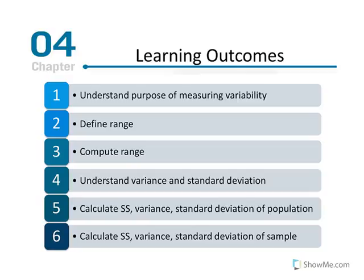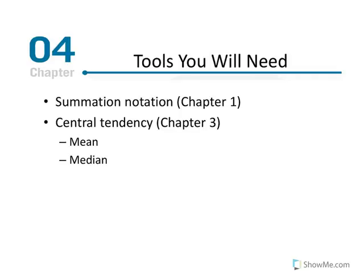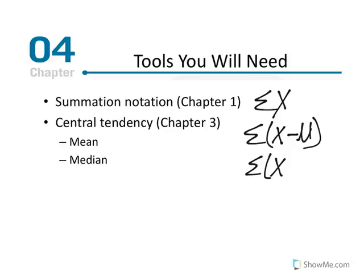We'll learn how to calculate SS — the sum of squared deviations — as well as calculate variance and standard deviation for a population, and do similar calculations for a sample, seeing how they differ. We'll need to master summation notation: sigma becomes very important, and we'll be summing x values, becoming familiar with the sum of (x minus the mean) and the sum of (x minus the mean) squared.